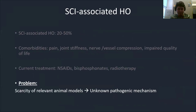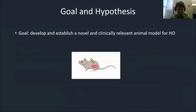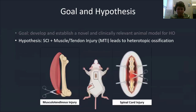The main problem is that there's a scarcity of relevant animal models for this condition, and by extension, the unknown pathogenic mechanism. Therefore, our project's goal is to develop and establish a novel and clinically relevant animal model for HO, with our hypothesis that a combined spinal cord injury and a musculotendinous injury leads to heterotopic ossification at the site of musculotendinous injury.